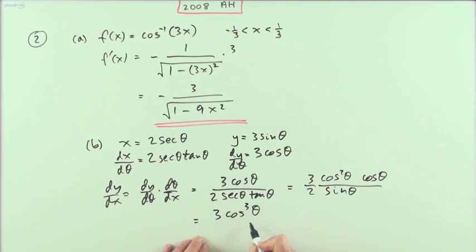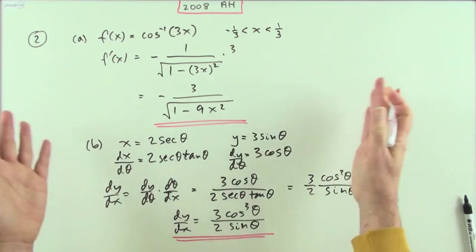So altogether then I've got three cos cubed theta over two sine theta for dy by dx. And that would do nicely, as they say. Five marks.